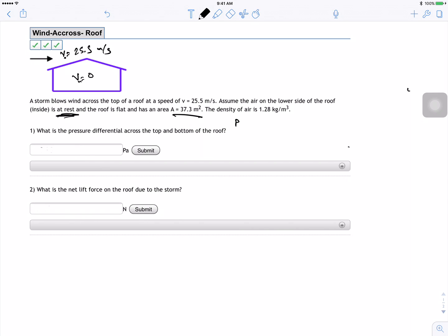So we'll do this equation. P out plus half rho of the air, V out squared, is going to equal P in plus half rho air V in squared. This one goes to zero because the V is zero.